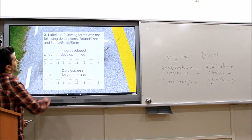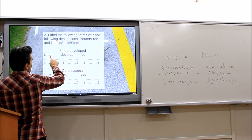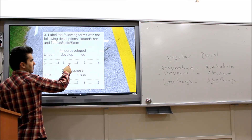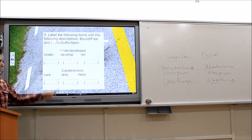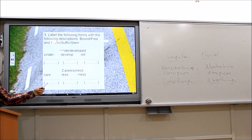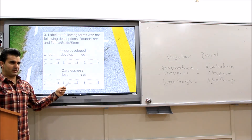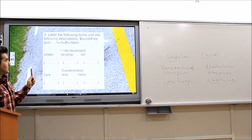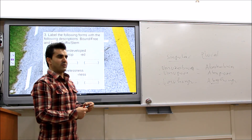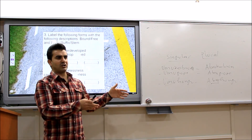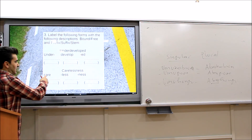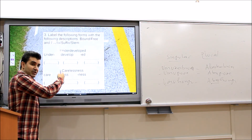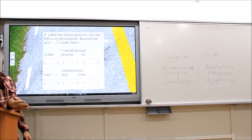If you label this form — 'under,' prefix; 'develop,' stem; 'standard,' suffix — this is bound, free, and bound. And here, 'carelessness': 'care' is the stem and it is free; '-less' is a suffix and it is bound; '-ness' is a suffix and it is bound. But if you categorize them as inflectional, functional, lexical, and derivational — 'careless' is lexical. Derivation applies to bound morphemes. '-Less' is derivational; it is bound.